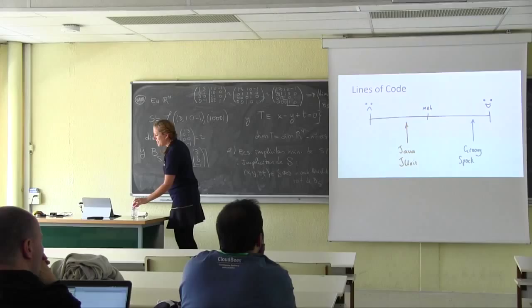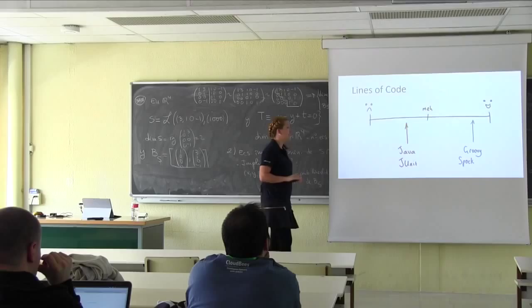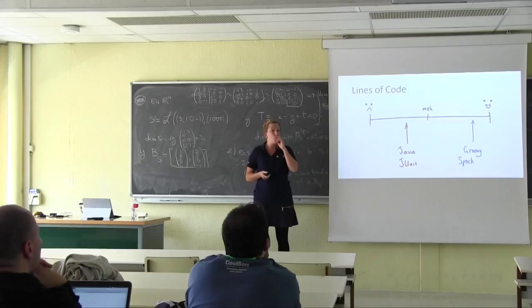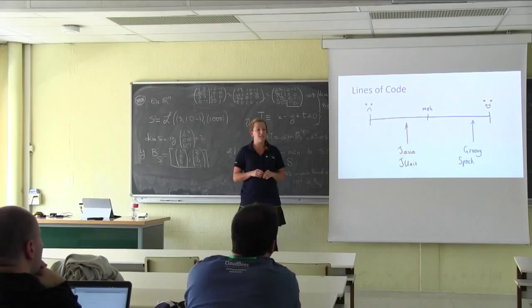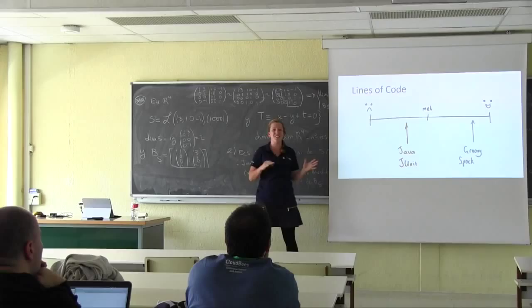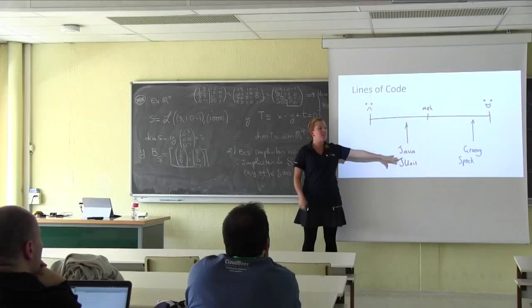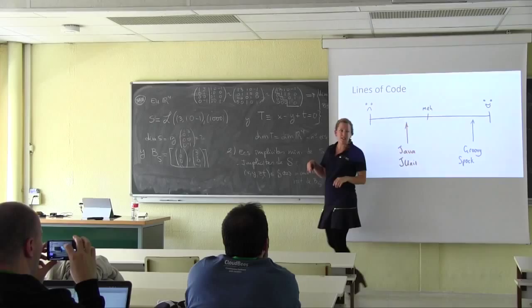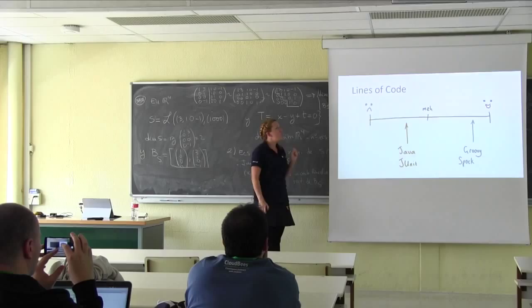Lines of code wise, Groovy is better than Java — you need far fewer lines for things like closures, and Java 8 lambdas make Java a bit better. Obviously all of this is from my personal point of view as a Java developer with no statistics behind it. I'd say Java with JUnit is on the wrong side of the chart, and Groovy with Spock is right up here. I put Spock a little bit over because with given-when-then, especially when you want things in order, you get more lines of code. But we don't really care about lines of code — what we care about is how easy it is to understand the code.